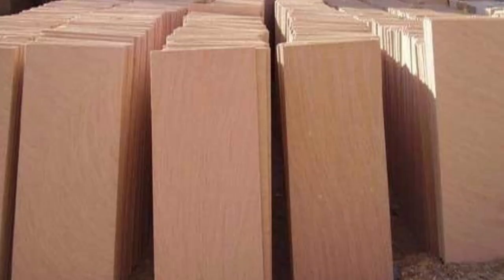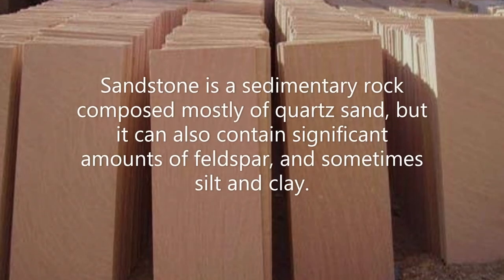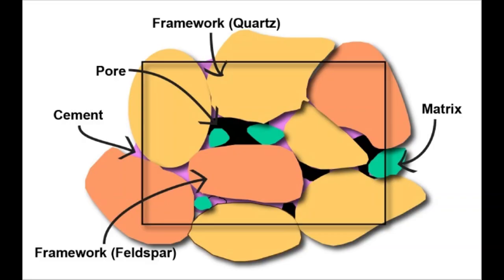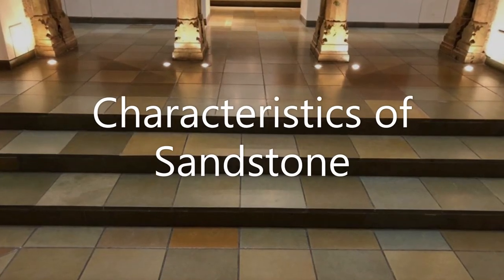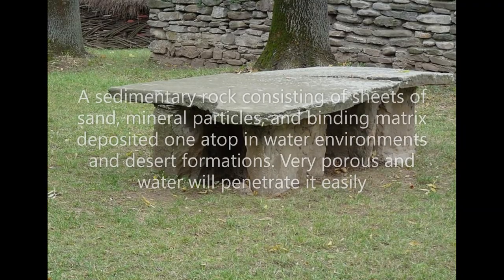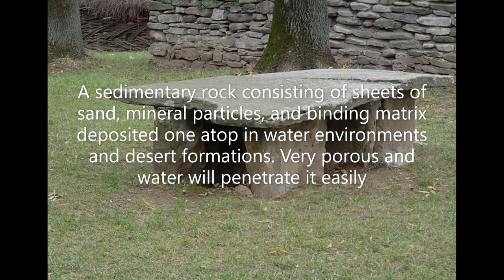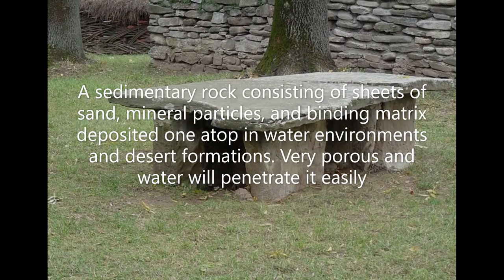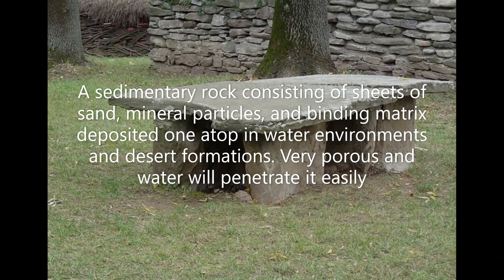Now we are talking about sandstone. Sandstone is a sedimentary rock composed mostly of quartz sand, but it can also contain significant amounts of feldspar, and sometimes silt and clay. It is a rock consisting of sheets of sand, mineral particles, and binding matrix deposited one atop another in water environments and desert formations.